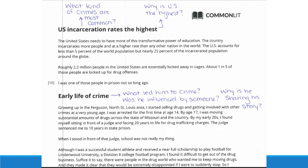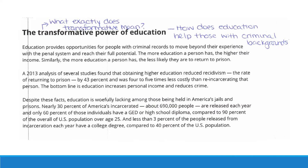A couple more examples. For the next heading: What kind of crimes are most common? Why does the US have the highest incarceration rates? Looking at the next heading: What led the author to crime? Was he influenced by someone? Why is he sharing this story? That last question starts to get at his purpose for writing — his rhetorical situation. And finally: What exactly does 'transformative' mean, and how does education help with criminal backgrounds? I like modeling that it's okay not to know what a word means, reminding students to look for the definition or understand how the author uses that word in context.